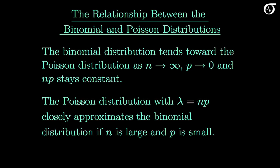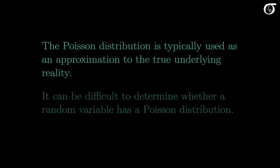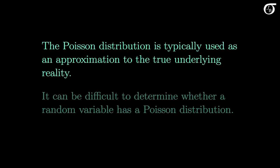I have videos that explore this relationship in greater detail. Like many models in probability and statistics, the Poisson distribution is typically used as an approximation to the true underlying reality. In most situations where we use the Poisson, we know it doesn't fit the scenario precisely, but we use it as an approximation — possibly a very good one. It can be difficult to determine whether a random variable follows a Poisson distribution to a reasonable approximation, and I'll look at some examples and considerations in another video.